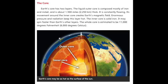The whole core is estimated to be 11,000 degrees Fahrenheit, or 6,000 degrees Celsius. Earth's core may be as hot as the surface of the sun.